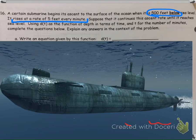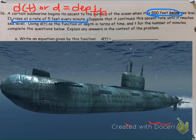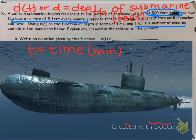It says suppose that it continues this rate of moving up until it reaches sea level. Use D of T as the function of depth. So D of T — or just D — represents the depth, how far under the water the submarine is. T represents the time in minutes, and the depth of the submarine is in feet. So D of T represents the depth at a given time in minutes.